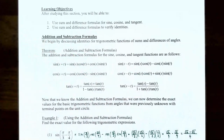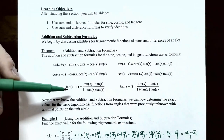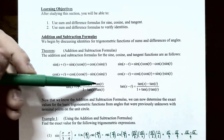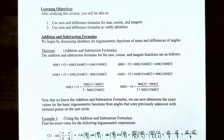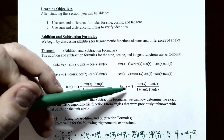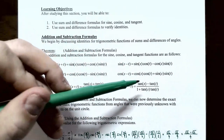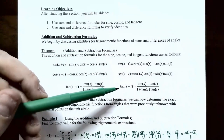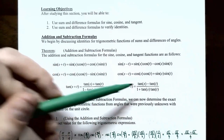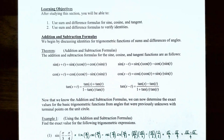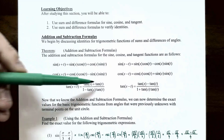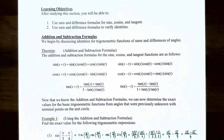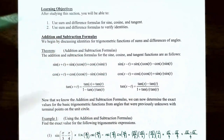For the tangent function, tan(s + t) equals [tan(s) + tan(t)] divided by [1 - tan(s)·tan(t)]. And tan(s - t) equals [tan(s) - tan(t)] divided by [1 + tan(s)·tan(t)]. Notice the sum formula has a sum in the numerator and a difference in the denominator, while the difference formula has a difference in the numerator and a sum in the denominator.